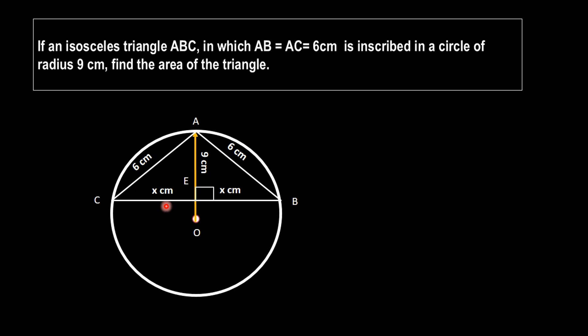So we get a base BC and an altitude AE. We have to find these two values in order to find the area of the triangle. We will take OC and OB both equal to 9 cm for our calculation.